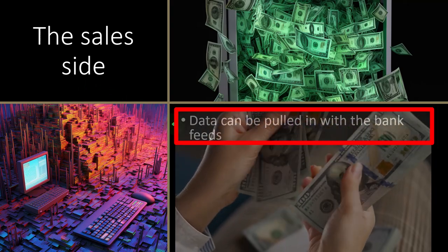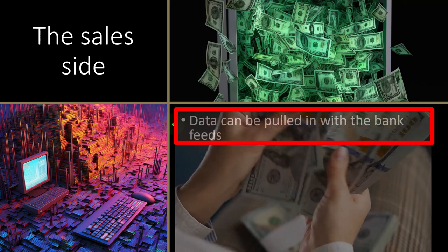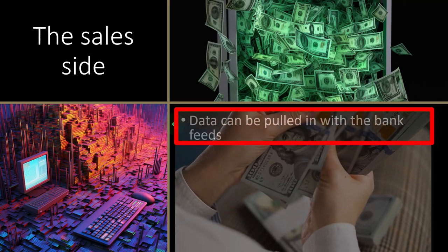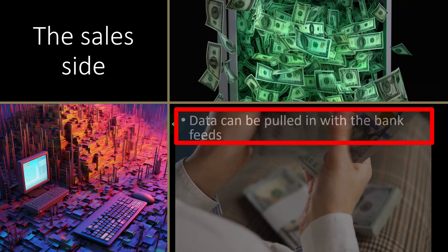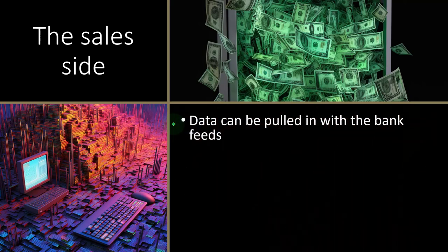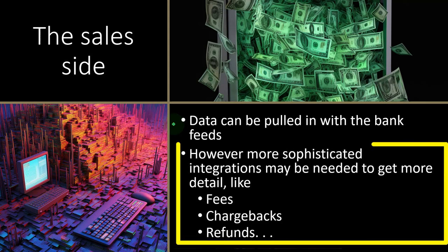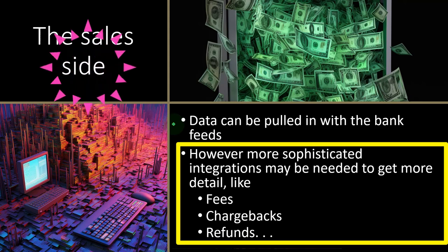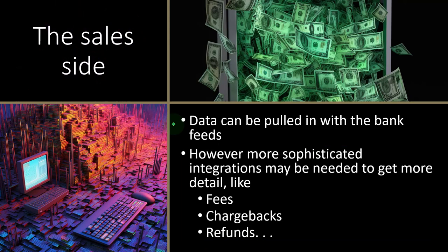Data can be pulled in with bank feeds. The easiest method is to just wait until transactions hit the bank and record revenue at that point — no direct connection to Shopify or Amazon. However, there are problems with that method. It doesn't capture the other breakouts that happen before money hits the bank — fees, chargebacks, and other things that happen at the platform level or payment processor level.